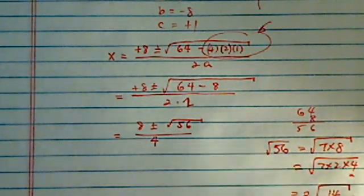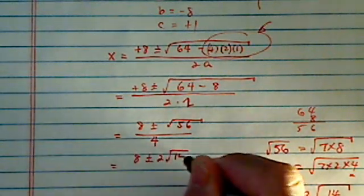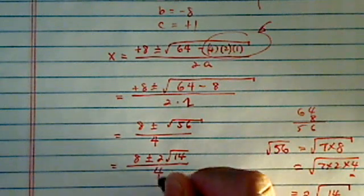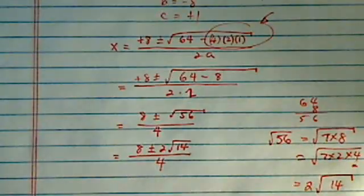So I have 2 radical of 14. Let's write it back there. 8 plus minus 2 radical 14. Even though 14 is an even number, there's no more perfect squares in the 14. So there's nothing we can do to simplify that.